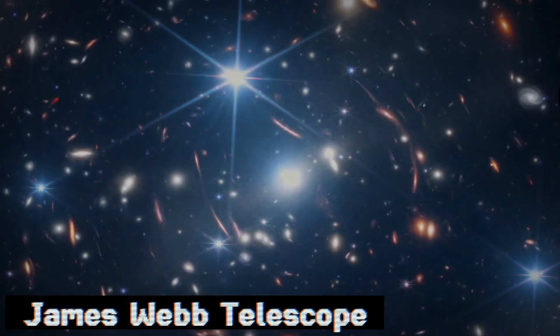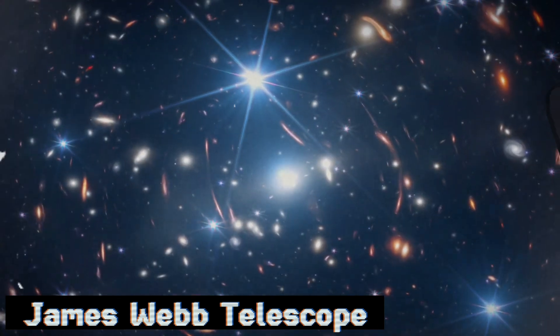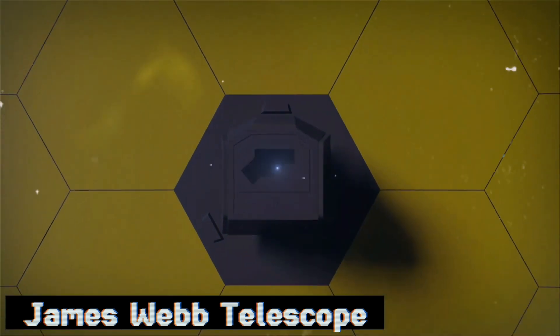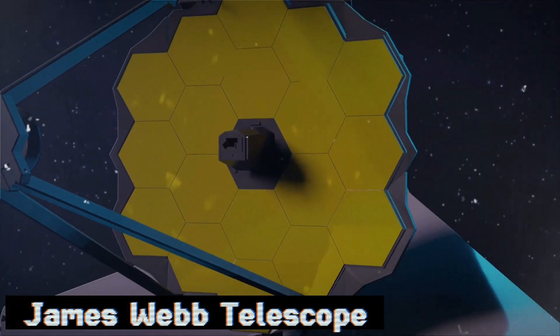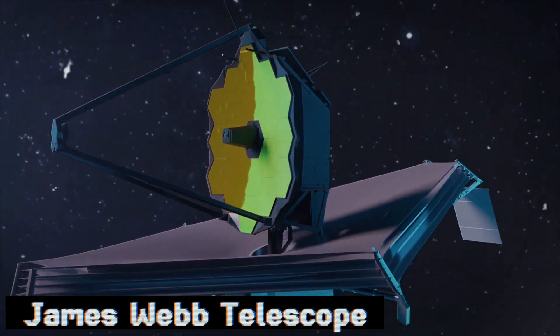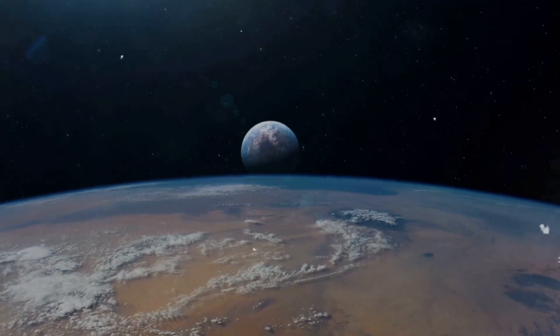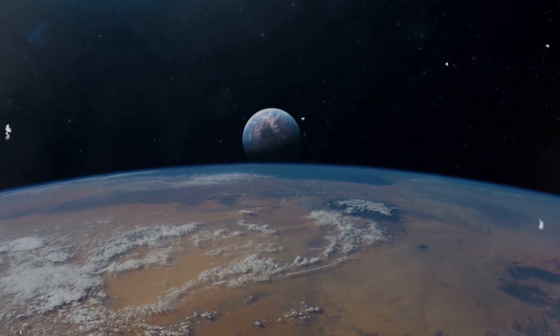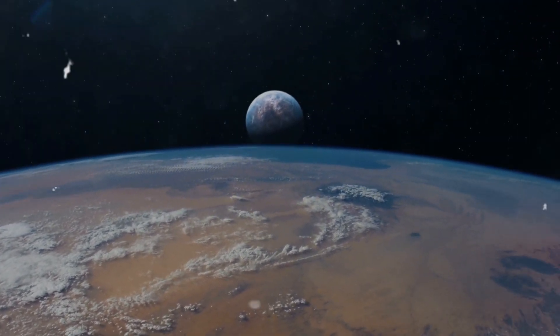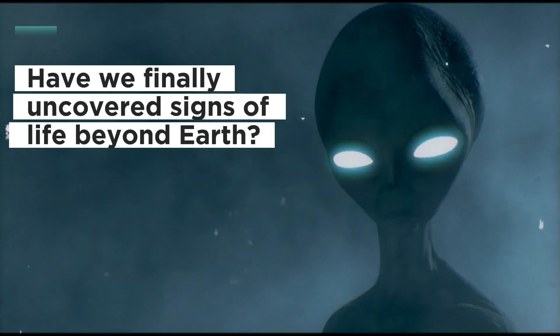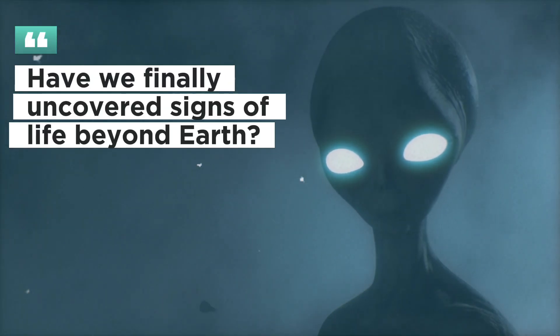The James Webb Space Telescope, recognized as NASA's most potent space science telescope, has significantly broadened our understanding of the universe since its launch in December 2021. A groundbreaking discovery it has made is the identification of the exoplanet K-218b in the Leo constellation. This prompts the question: have we finally uncovered signs of life beyond Earth?